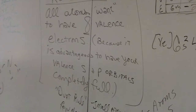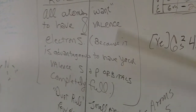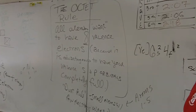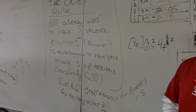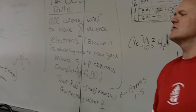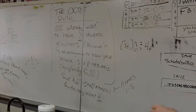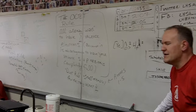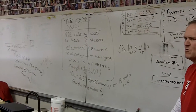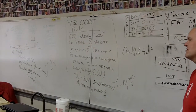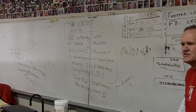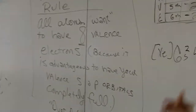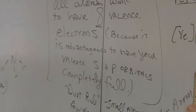The octet rule says that all atoms want to have eight valence electrons. Now, the reason I have 'want' in quotes is not to emphasize it, because that's not what we use quotes for. It's to say, well, they don't really want. Electrons don't want anything. Just like a stapler doesn't want to be in a bucket of mashed potatoes — it's a stapler, it doesn't want anything. Electrons don't want anything, or atoms don't want anything, but it's an energy thing.